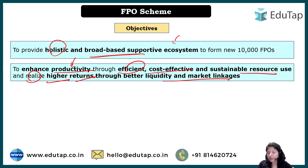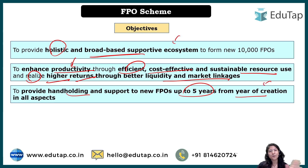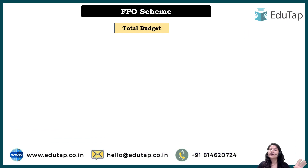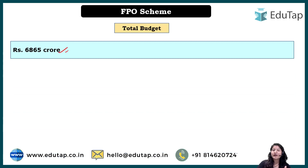The handholding and support lasts up to five years from the year of creation. For example, if an FPO was formed in 2022, then from 2022 for five years this handholding and capacity building will be done. The total budget allocated for this scheme when it was launched in 2020 was 6,865 crore rupees. This budget is divided into two phases — the concept remains the same but budget allocation has different objectives at different phases.